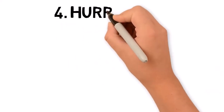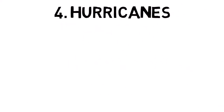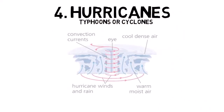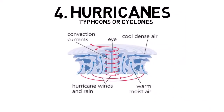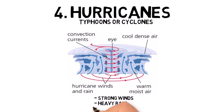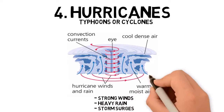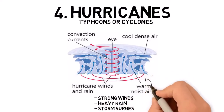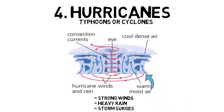Hurricanes, also known as typhoons or cyclones depending on their location, are powerful tropical storms that form over warm ocean waters. They are characterized by strong winds, heavy rain, and storm surges, which are walls of water pushed ashore by the wind.